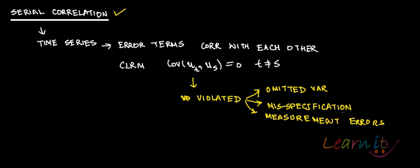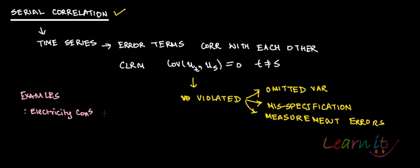What are the different examples of serial correlation — how could you relate to what exactly serial correlation could be in real life? For example, electricity consumption during different seasons.